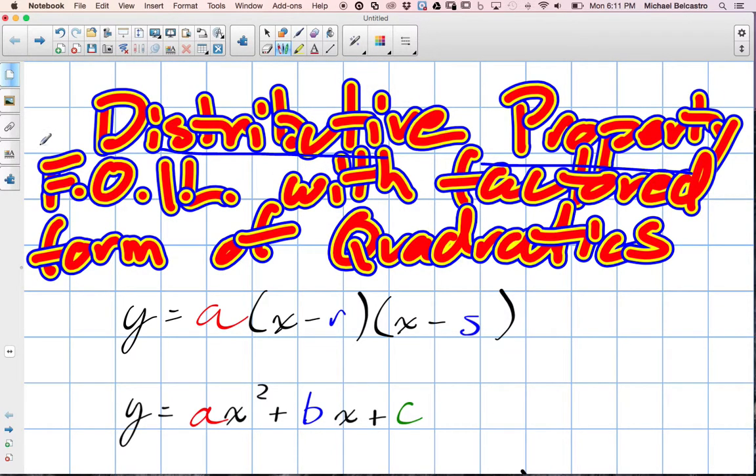Look at distributive property, which is known as FOIL, and I added a little extra here to the title. Then we're going to focus on working with factored forms of quadratics.